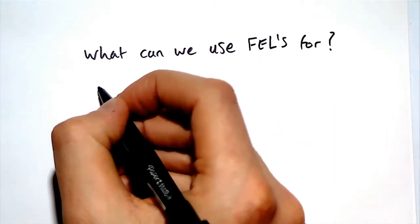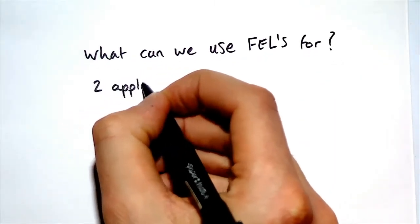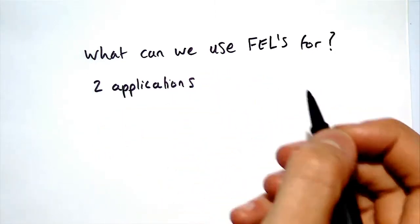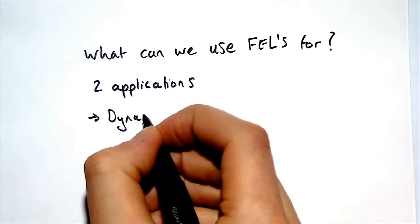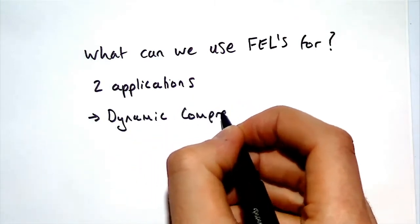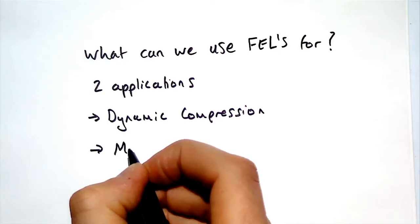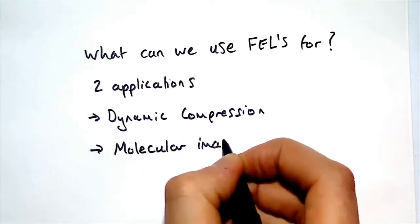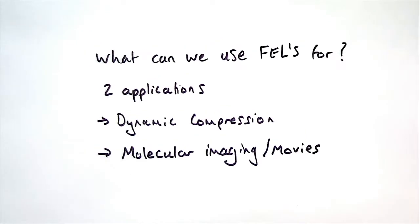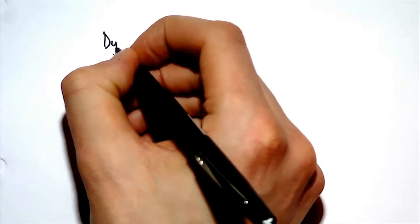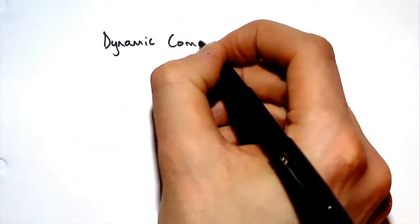We'll now get stuck into the applications of free electron lasers. In this video, we'll only consider two, but of course there are many, many more. The first application we're going to look at is dynamic compression. We'll then go on to look at molecular movies or molecular imaging. So first off, let's consider dynamic compression.